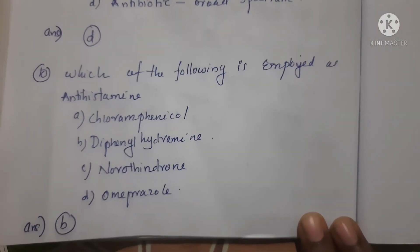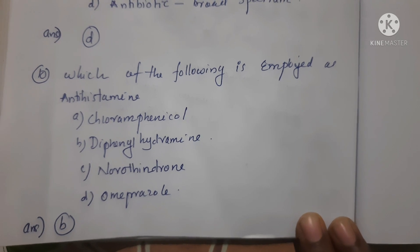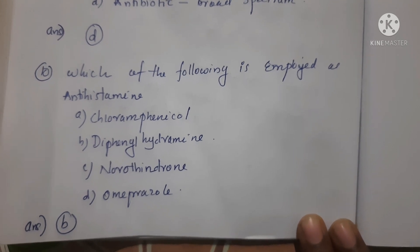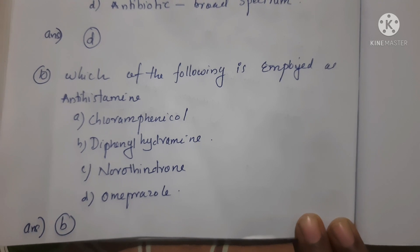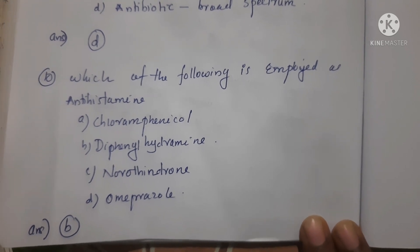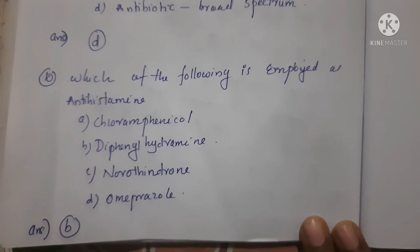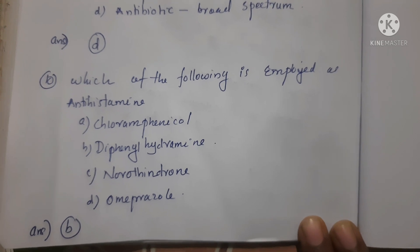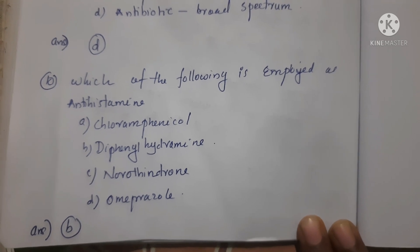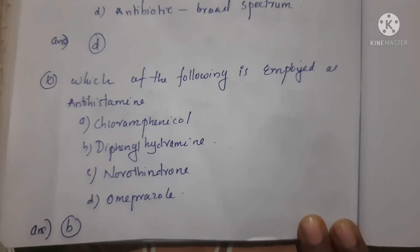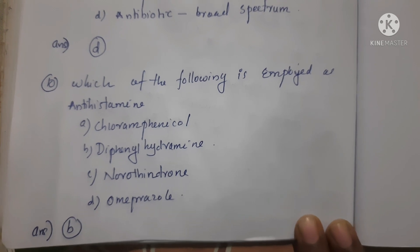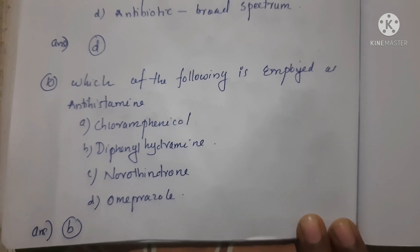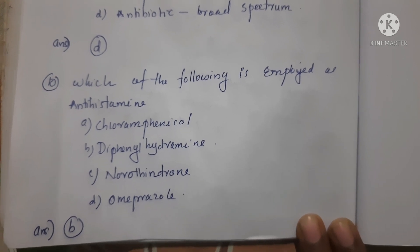Next question: which of the following is employed as an antihistamine? Option A chloramphenicol, Option B diphenylhydramine, Option C noradrenaline, Option D omeprazole. Correct answer is Option B — diphenylhydramine is employed as an antihistamine.